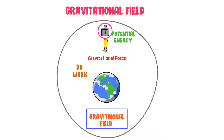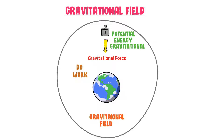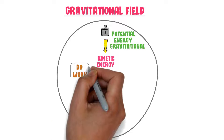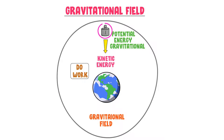So we say that this object possesses potential energy. More precisely, this object is present in the gravitational field of the earth, so we say it possesses gravitational potential energy at that point. When this object falls down, its gravitational potential energy is converted to kinetic energy. From this example, we learn that if we do work on an object in a gravitational field, gravitational potential energy is stored in that object.